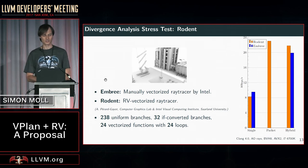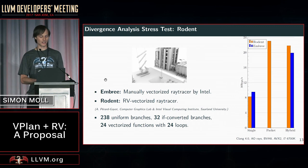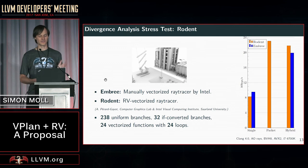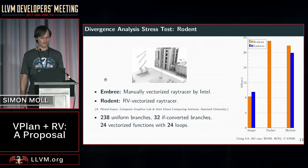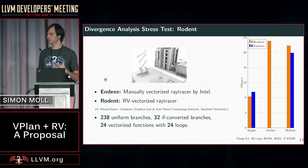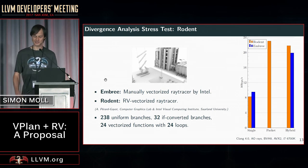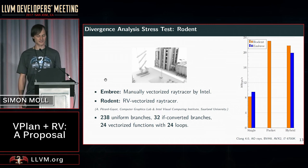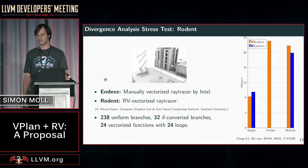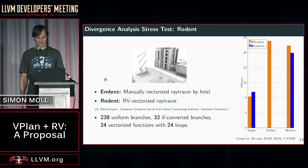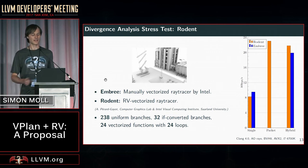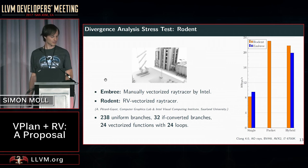Here's a result we have: we vectorize an array ray tracer. There's a scalar code base vectorized with RV, comparing against Embree, which is a manually vectorized ray tracer by Intel — essentially vector intrinsics specific to x86 AVX/AVX2. On the other hand, we have a scalar code base automatically instantiated for the ray tracer.